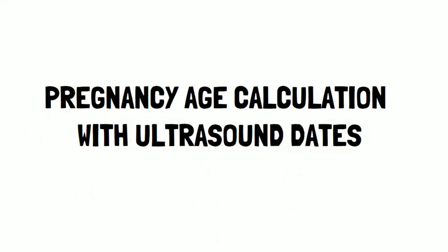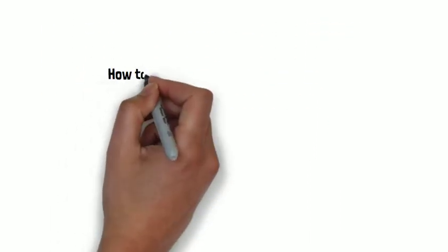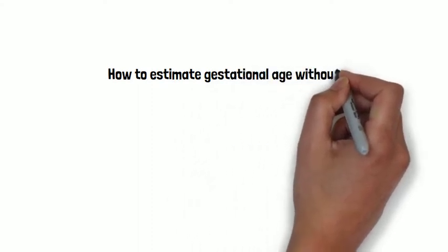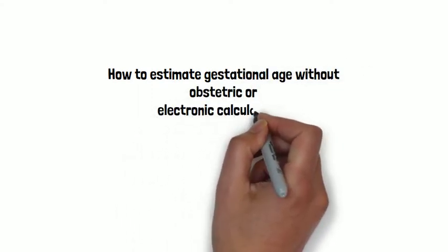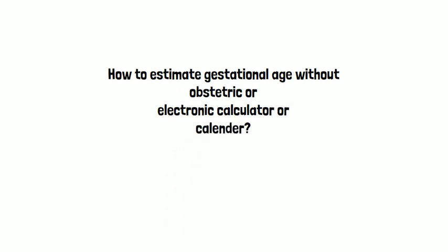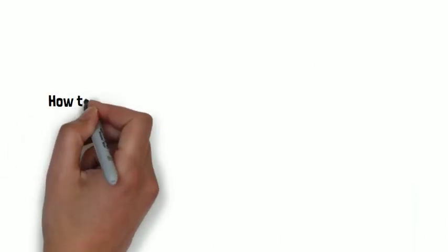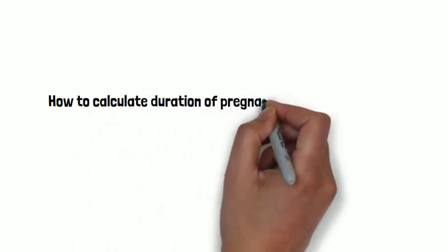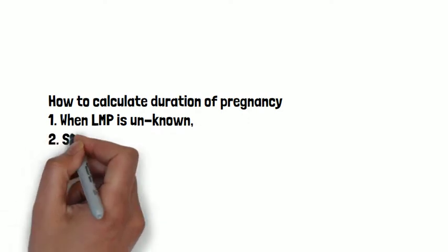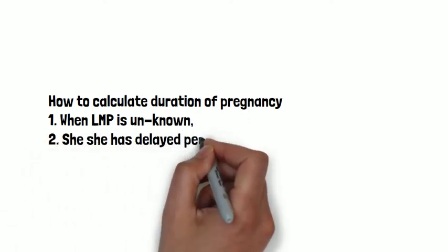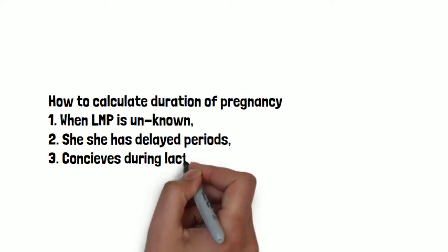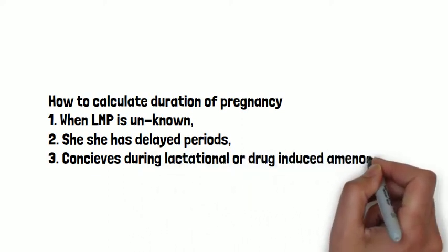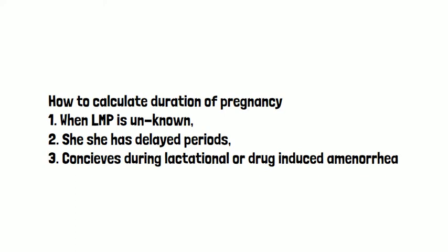Assalamu alaikum. Today we are going to learn how to calculate pregnancy dates when you only have one ultrasound report and you don't have a last menstrual date. This applies to situations where you don't have any calculators or calendars. Some women do not remember their last menstrual period, may have prolonged menstrual cycles of six to eight weeks, or may become pregnant during a period of amenorrhea. In such situations we calculate dates according to their early or first ultrasound.